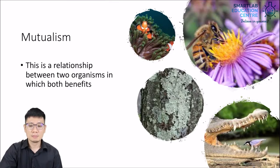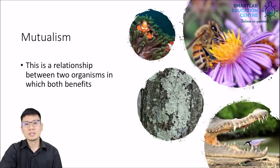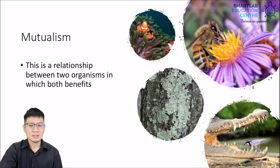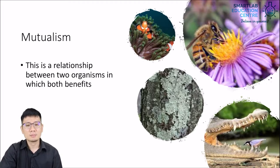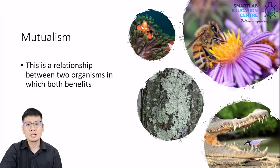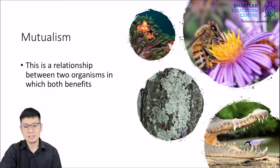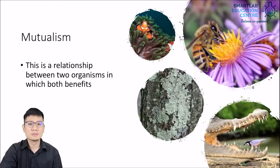A very simple example is the pollination of flowers. Flowers produce nectar or have sweet smells — or in some cases nasty smells — that attract animals such as bees that come to feed on their nectar. In doing so, the bee ends up collecting some pollen, and when they visit other flowers, they help spread the pollen grains from one flower to another, thereby helping the plants fertilize and allowing them to reproduce. So this is a form of mutualism between plant and animal.